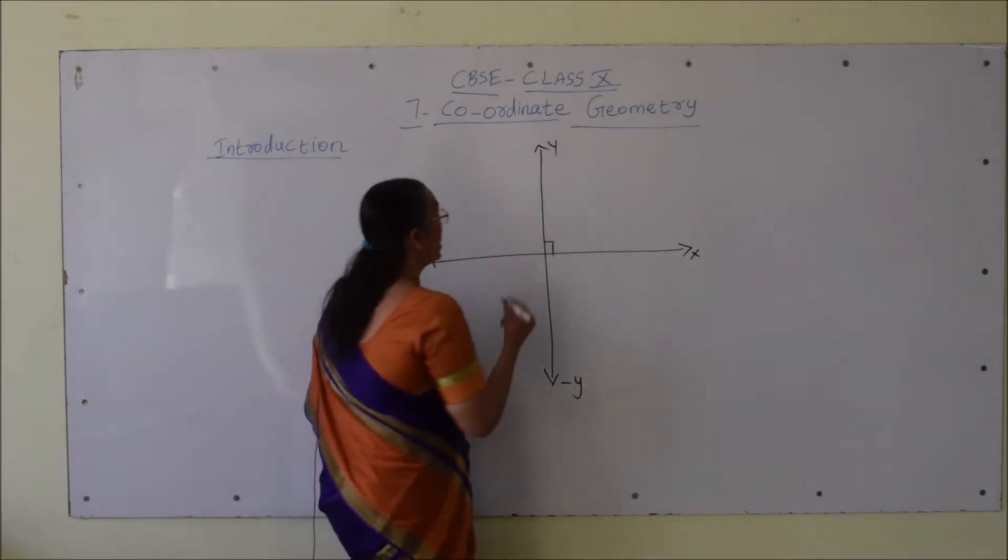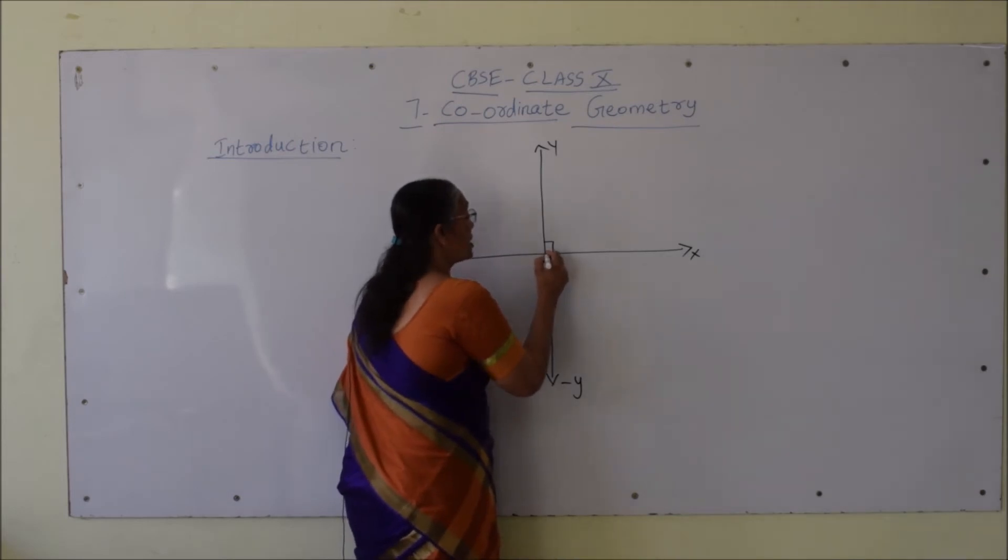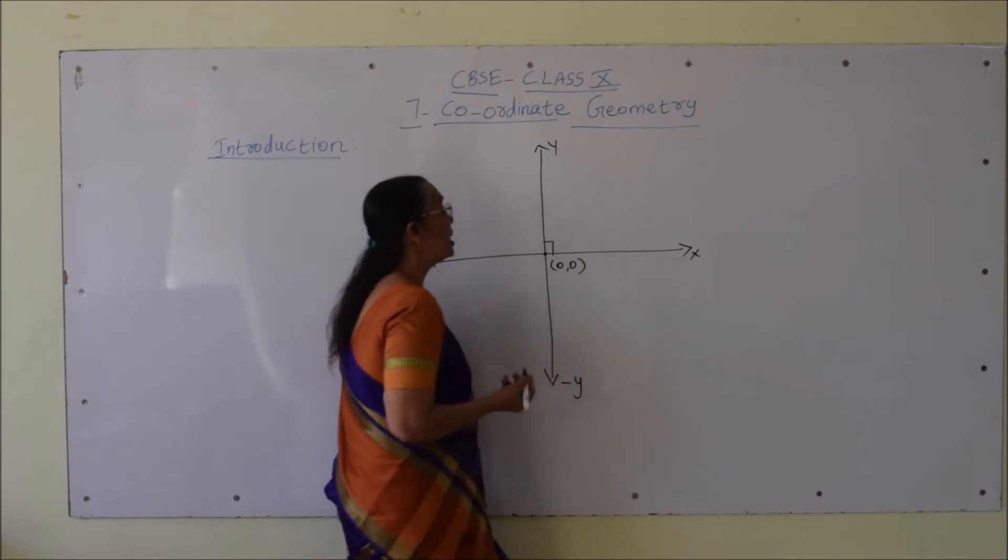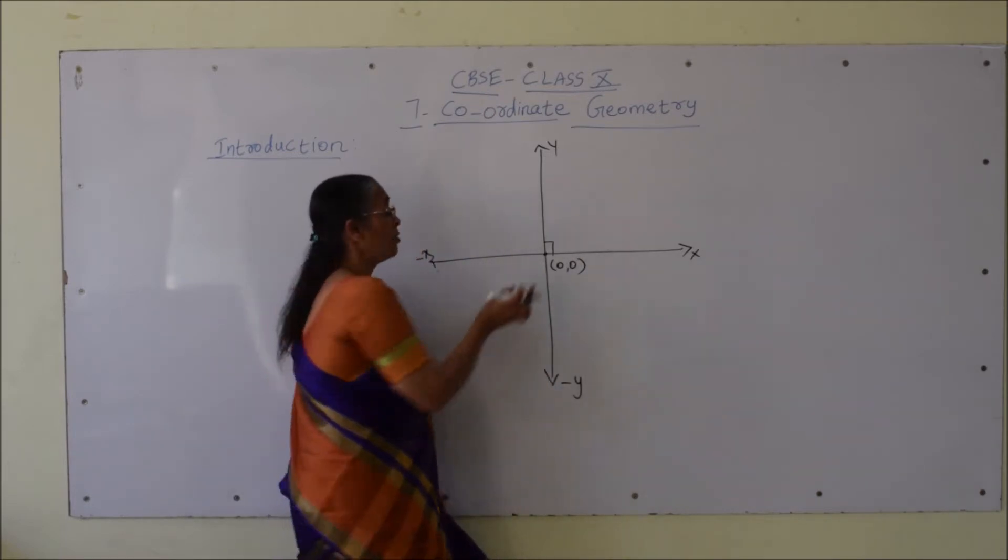Their point of intersection is called the origin and it is represented by the coordinate pair (0, 0).